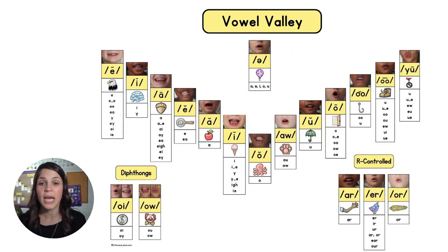In English we have two types of speech sounds. We have vowel sounds and we have consonant sounds. We're going to focus on vowels first, so take a look at this vowel valley.